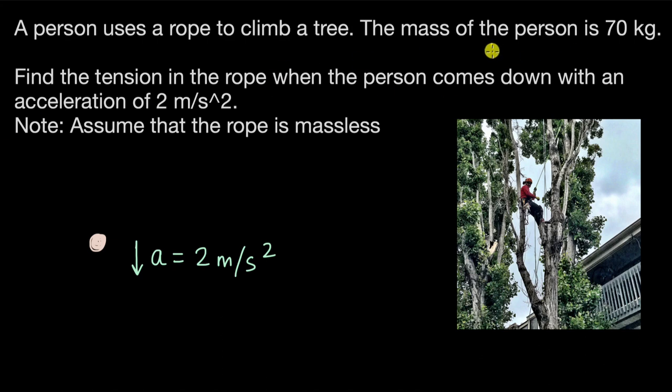We can write the weight as w equals mg. So this would be 70 into 10, we can take g as 10. This would be 700 newtons. So there will be a force in the downward direction. This will be 700 newtons.